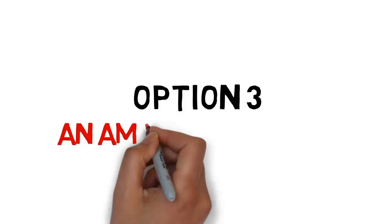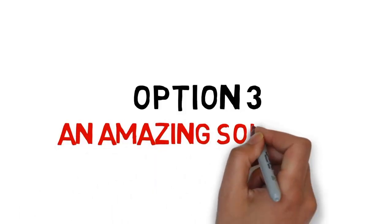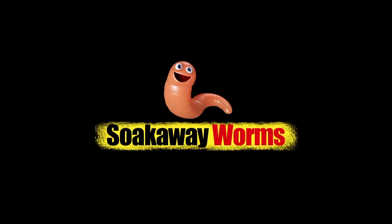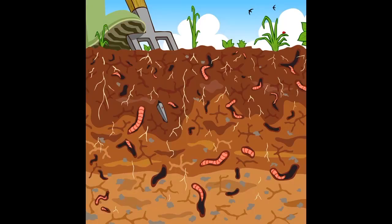Option three is an amazing solution that will fix all your septic tank and soakaway problems. Soakaway worms are an incredible safe, clean, natural and organic solution. Worms have been around for thousands of years, breaking down and converting waste into safe, clean, organic matter.